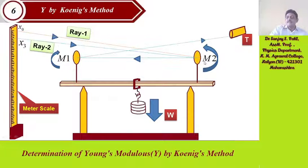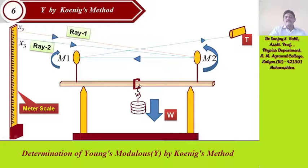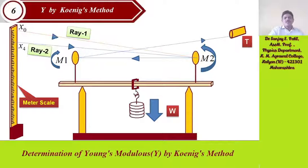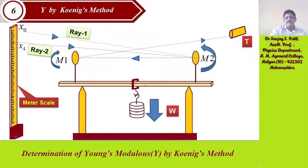Bending action takes place in mirror M2 as well as mirror M1. Whatever weights are applied to the beam, bending action takes place, and that bending is observed with the help of the mirrors, telescope, and meter scale arrangement. When the fourth weight is applied, the reading shifts from x0 to x4, with further bending in both mirrors M2 and M1, and the beam bends at the center.